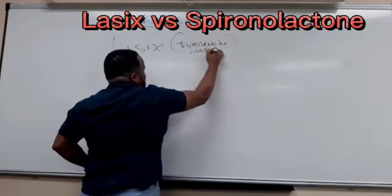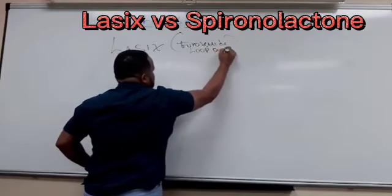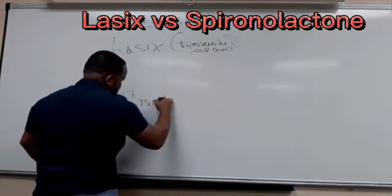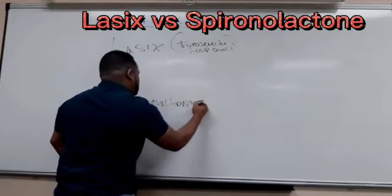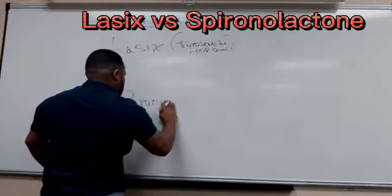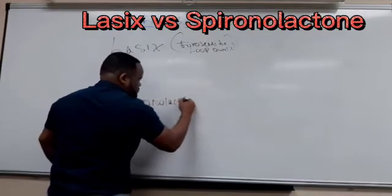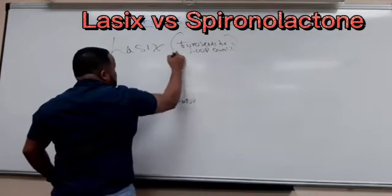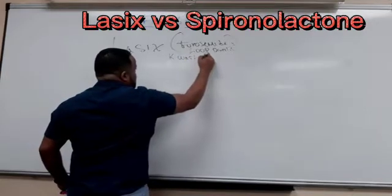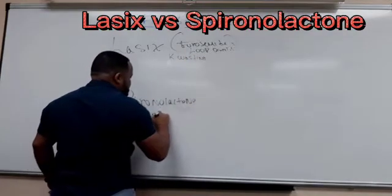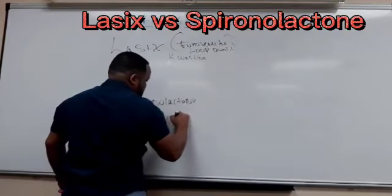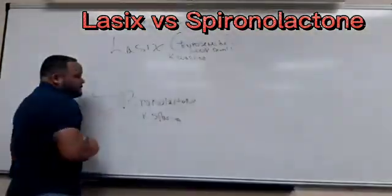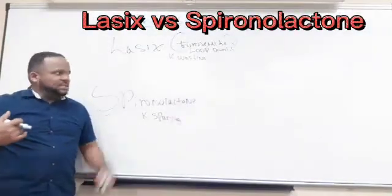We have a loop diuretic, which is also known as a loop diuretic. Now we have the other one that is called spironolactone. This one is a potassium-sparing diuretic. This one is wasting potassium.